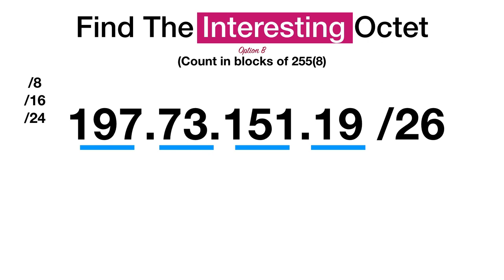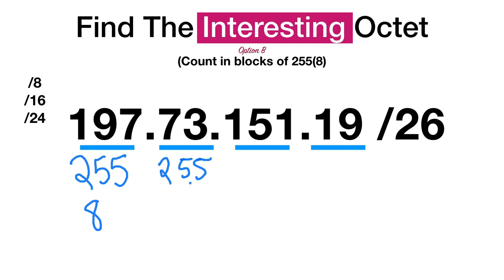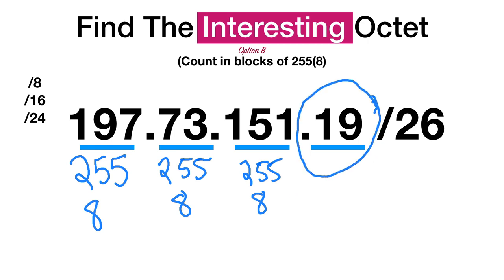The second way is to count in blocks of eight, or 255, because 255 equals eight bits. This is the way I use to figure out the interesting octet. You write 255 and say that's eight — not close enough since we need to get closest to 26 without going over. Write 255 again: that's 16, then 255 again: that's 24. That's as close as we're going to get, so I know to spend all my energies on that octet.